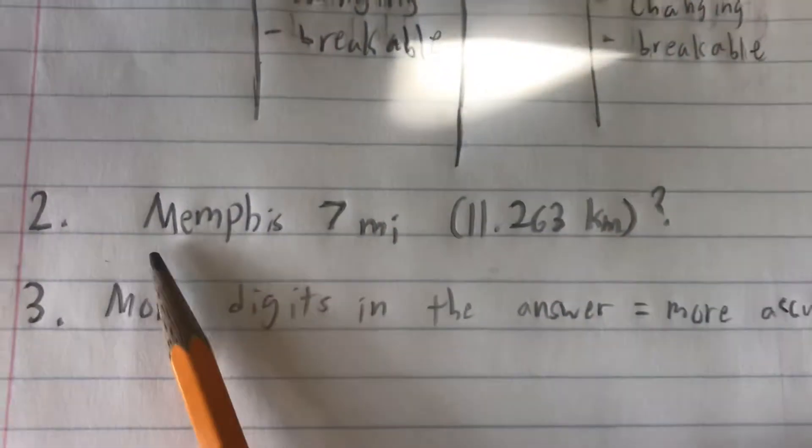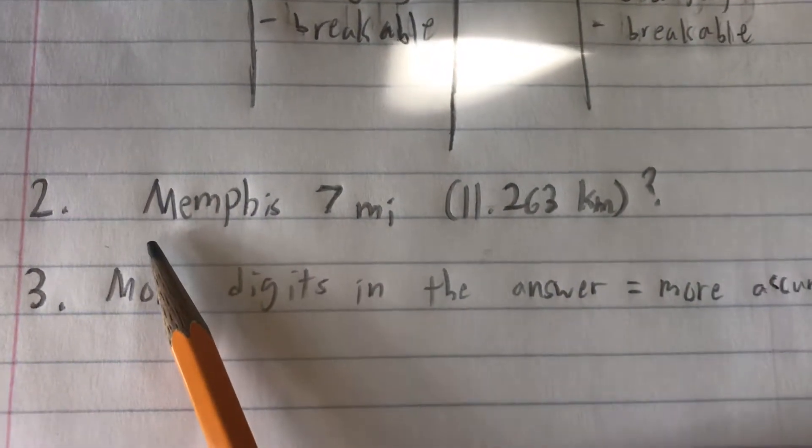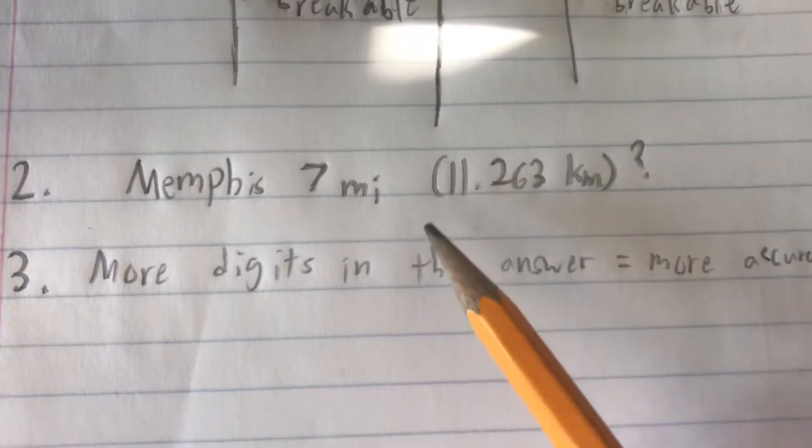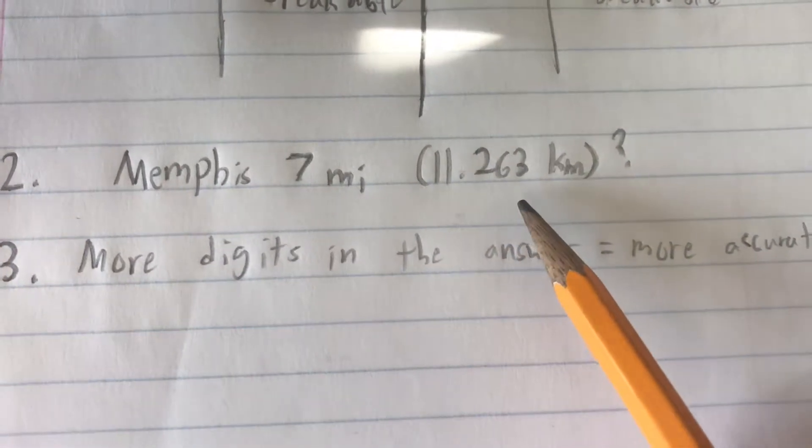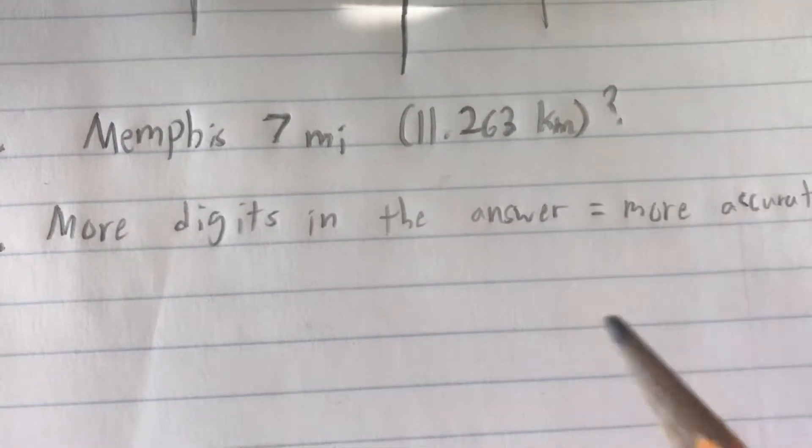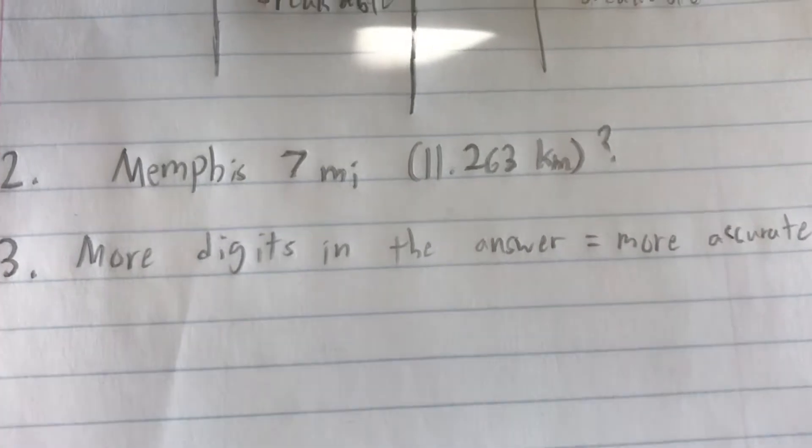So here's question two. You're driving in a car, and you see a sign that says Memphis is 7 miles or 11.263 kilometers away. What is wrong with the street sign?